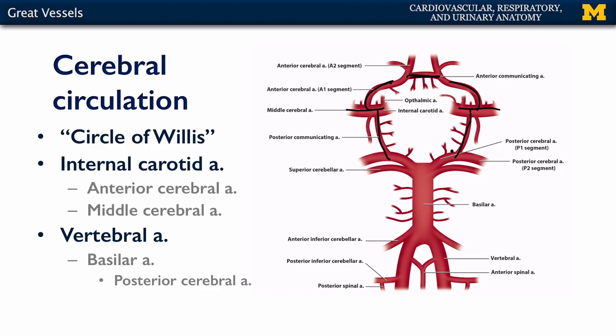The vertebral arteries ascend the neck through the transverse foramina of cervical vertebrae one through six. They then enter the skull through the foramen magnum and give off posterior inferior cerebellar arteries, or PICA for short.